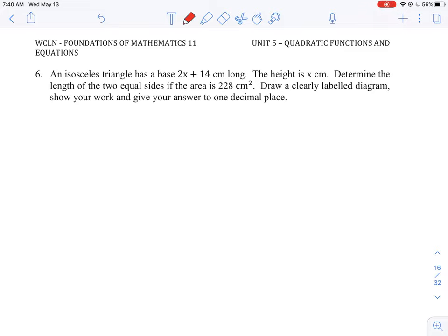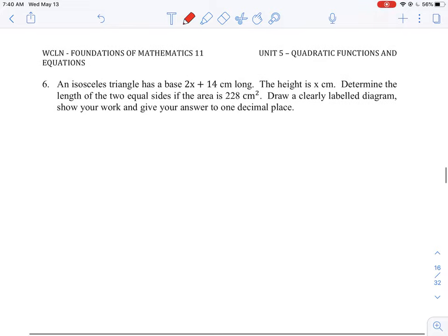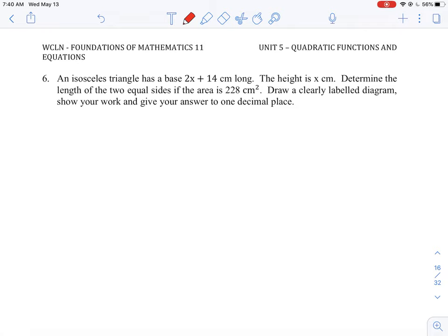Okay, so let's take a look at this question. We have a triangle here and it says it's an isosceles triangle. From geometry we know that means the triangle has two equal sides.